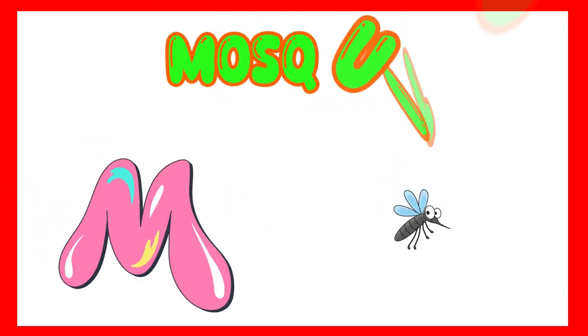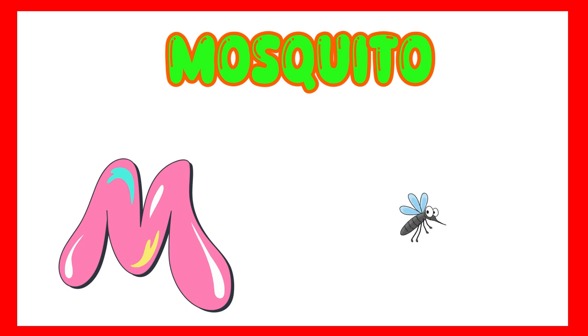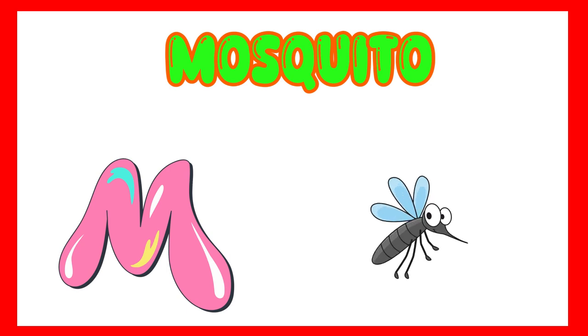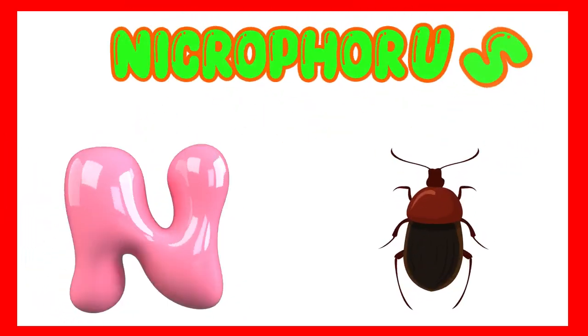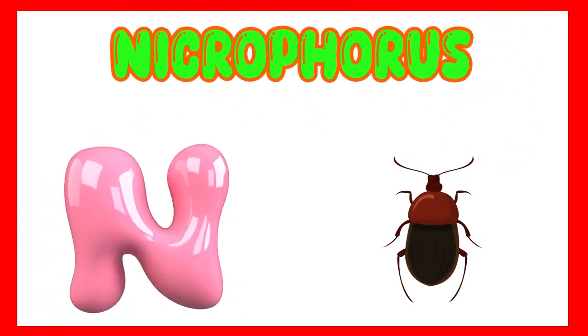M is for mosquito. Ma, mosquito. N is for necrophores. Neh, necrophores.